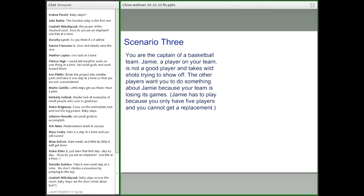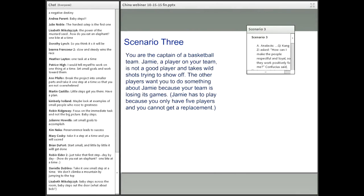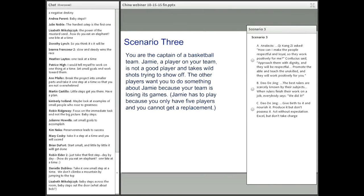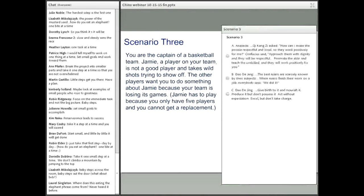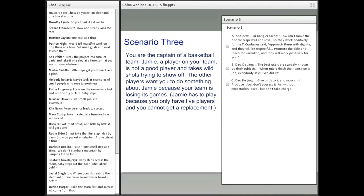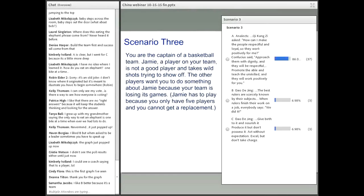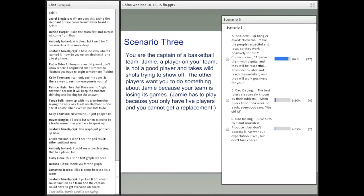Scenario three: You are the captain of a basketball team. Jamie, a player on your team, is not a good player and takes wild shots trying to show off. The other players want you to do something about Jamie because your team is losing its games. Jamie has to play because you only have five players and cannot get a replacement. Read the different sayings and pick the one you think is the best. It looks like we have another clear winner. For anyone choosing one that's not the apparent suggested answer, I'd love to see in the chat why you think that's a better answer. There's really no right or wrong answers, just a suggested answer.